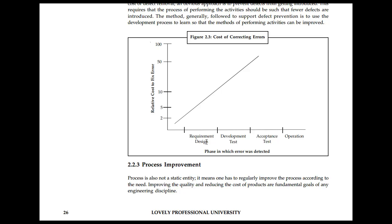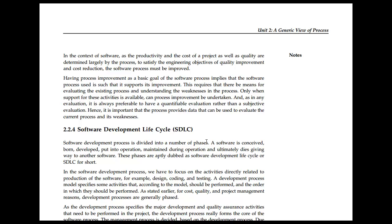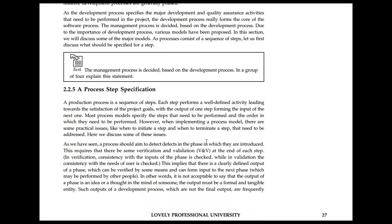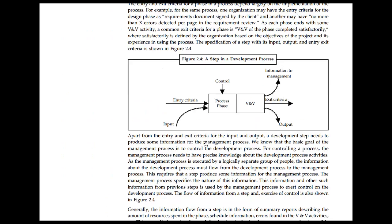The cost of correcting defects increases significantly if you don't deal with them early. If you follow the software development life cycle, the process specification defines a step in each process phase, including verification and validation information, exit criteria, and outputs.